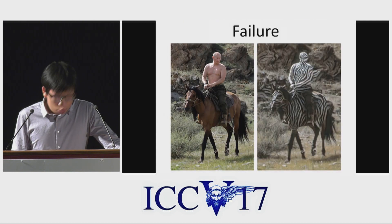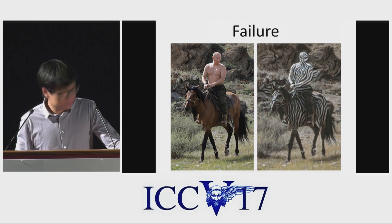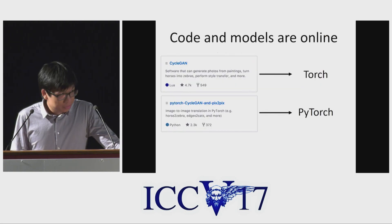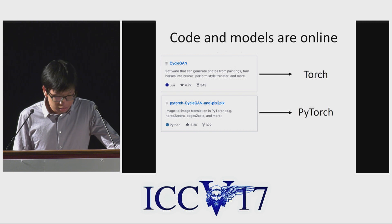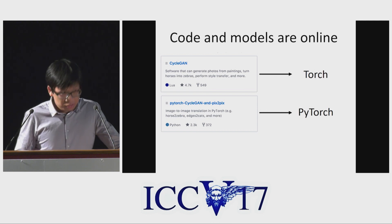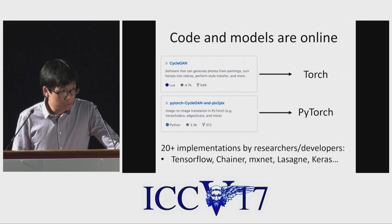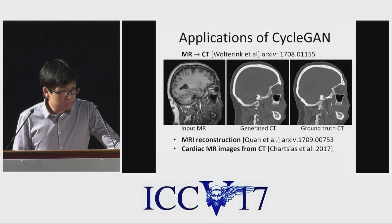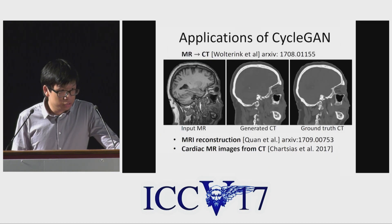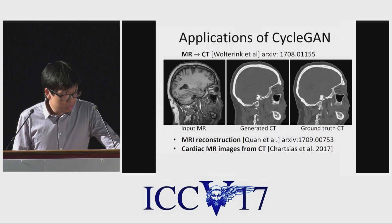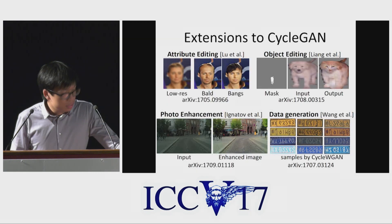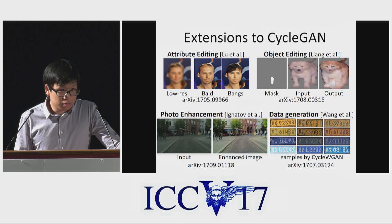Even our failures are quite entertaining. We release both Torch and PyTorch code, and we can find more than 20 implementations by other developers. People have already used CycleGAN in a variety of applications, such as translating MRI images into CT scans. A number of creative extensions and improvements has already appeared on the archive.